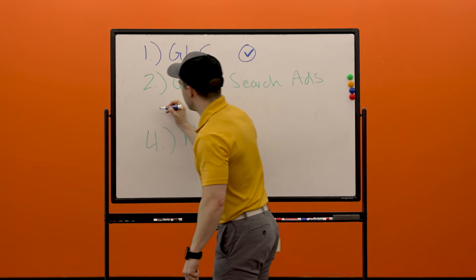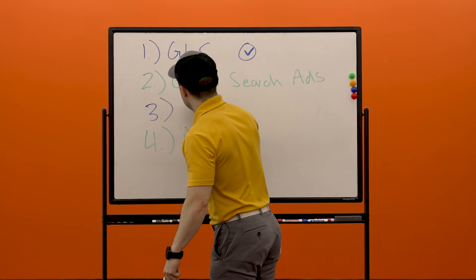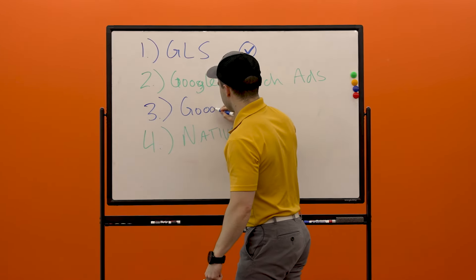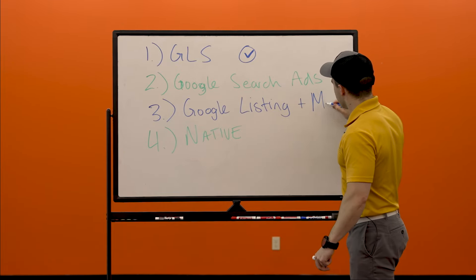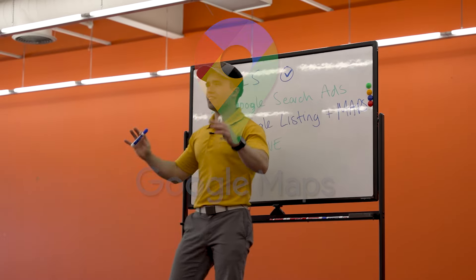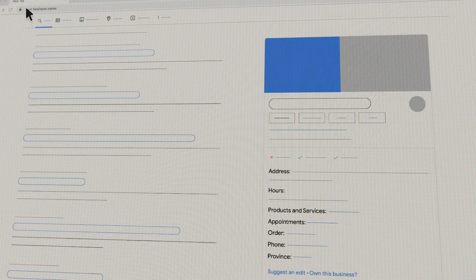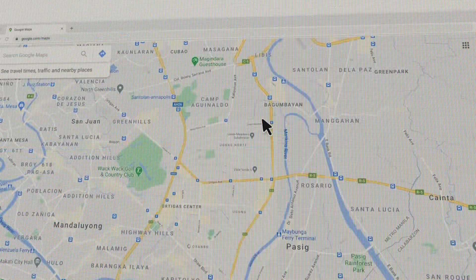The next one is super important, and that is your Google listing. This is still above native search. And really what this is actually is part of Maps. Back in the day, they used to have Google business listings totally separate from Maps. Now, your Google listing is on the map.